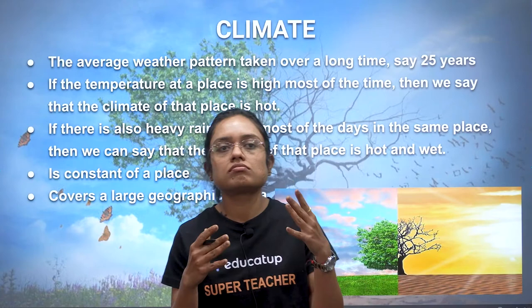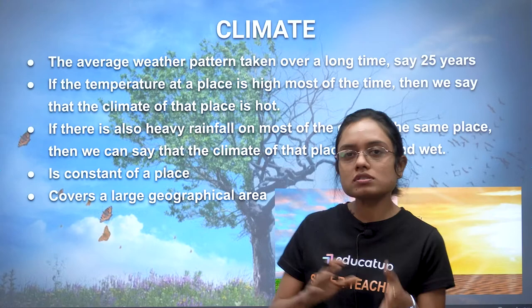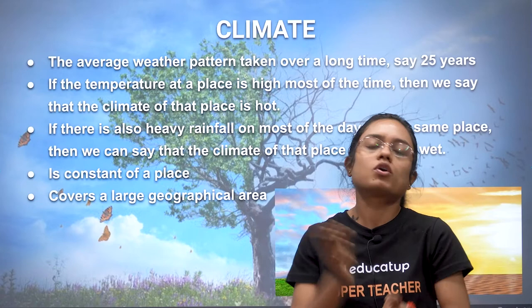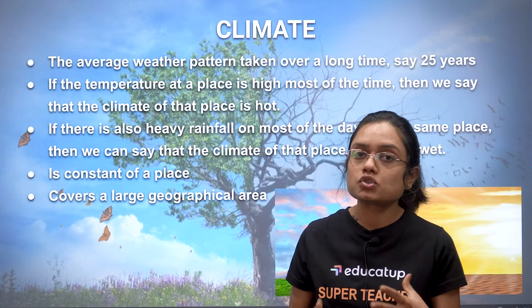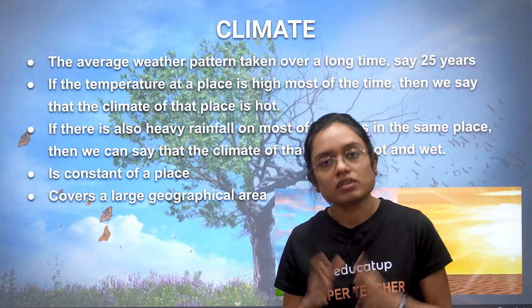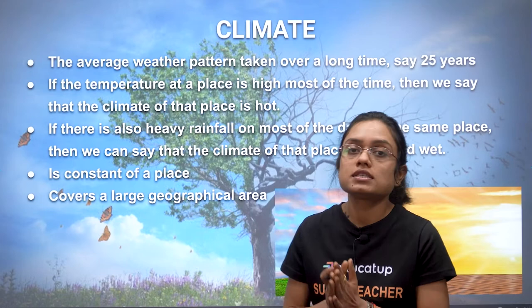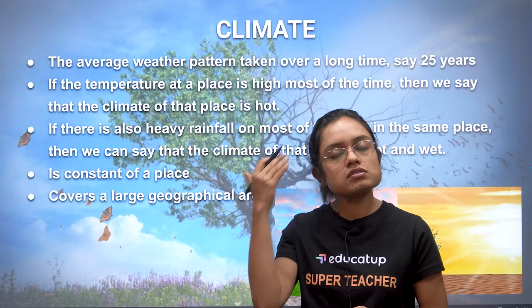Now what do we understand by climate? Weather and climate may seem like synonyms, but they are not. Climate is the weather condition or atmospheric pattern of a place over a very long time — say 25 years. For example, when we think of Rajasthan, we perceive it as a hot place.